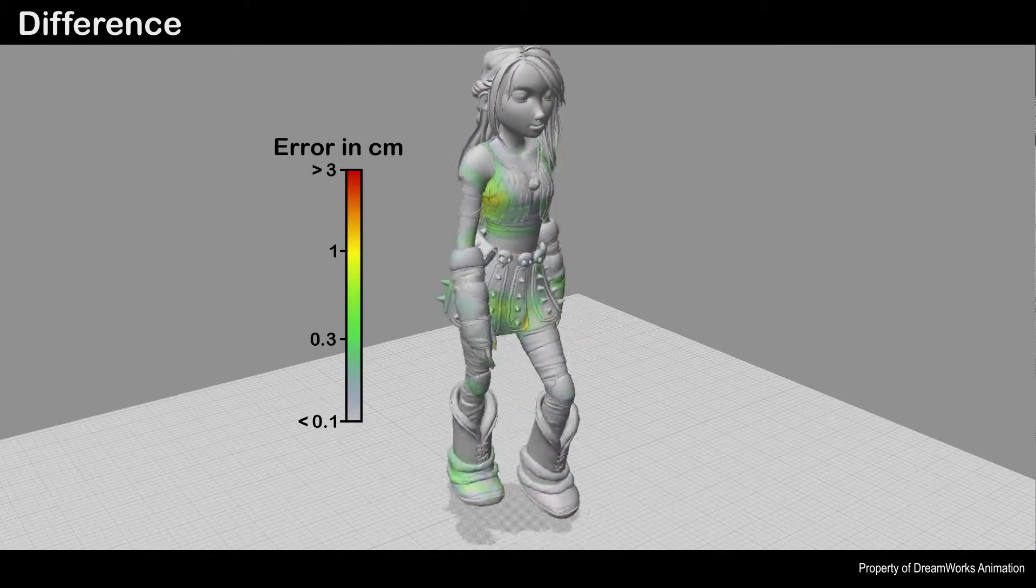Here we show our approximated deformations with a heat map indicating per vertex approximation errors.